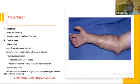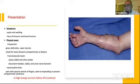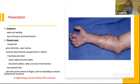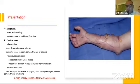Regarding presentation, the patient usually complains of pain, swelling, and loss of forearm and hand function. On physical examination, we look for gross deformity, open injuries, and check for tense forearm compartments or blisters, which indicate ischemia and increased intracompartmental pressure. Neurovascular examination is essential and vital in such cases.